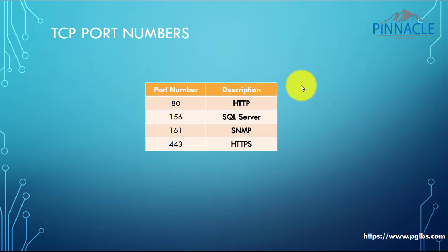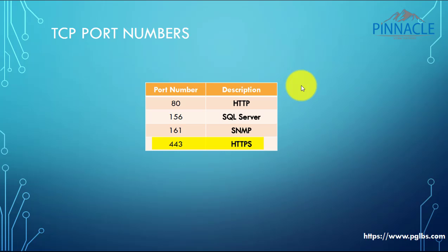Here again are some important port numbers we normally use. Port number 80 is used for HTTP - hypertext transfer protocol connection. If you are using SQL server services, the port number is 156. If you are using SNMP - simple network management protocol - services, the port number is 161. If you are using a secured website service, it is port 443. There are many other TCP port numbers depending on what kind of services you are using.